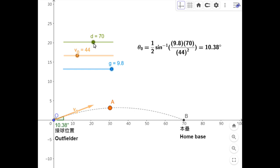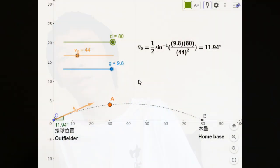If we increase the distance to 80 meters, the pitch angle becomes 11.94 degrees. Using this formula, every outfielder can know exactly how steep their throws should be so that their ball reaches home base the fastest.